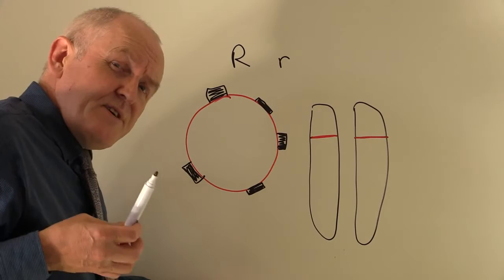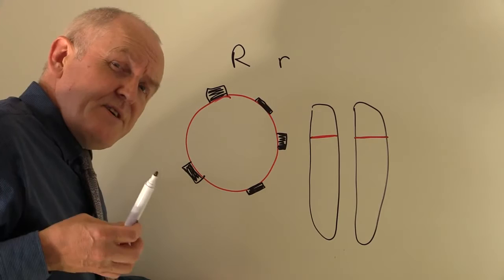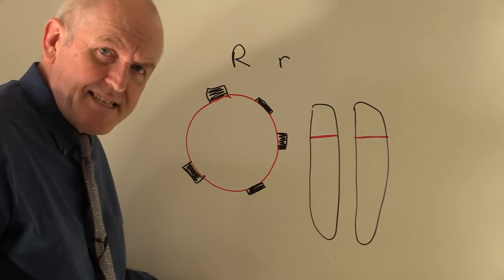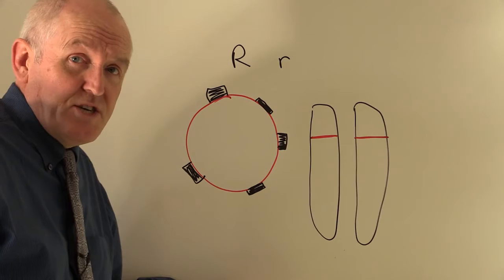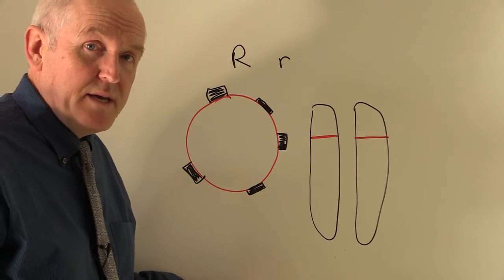Now, if there's Rhesus factor incompatibility problems leading to hemolytic disease of the newborn, that always occurs with a Rhesus negative mother. Now, in the UK, about 15% of the population are Rhesus negative. So it would be reasonable to expect 15% of women to be Rhesus negative.